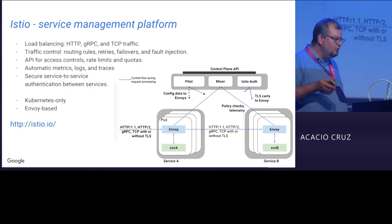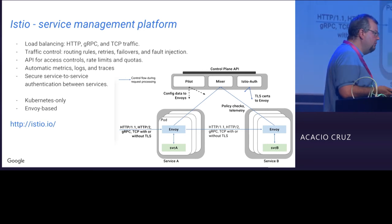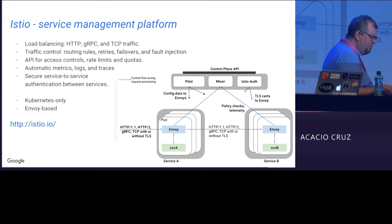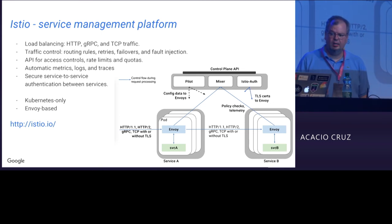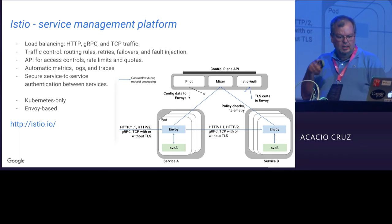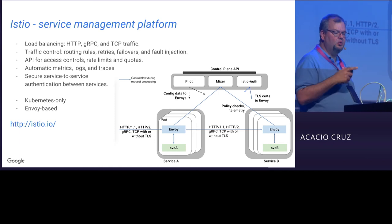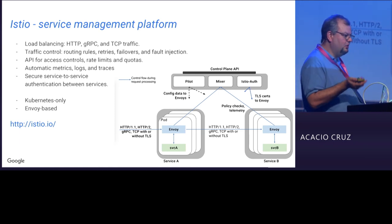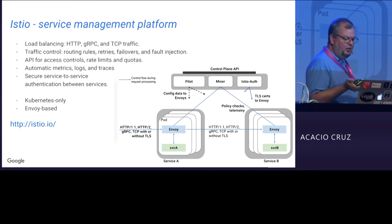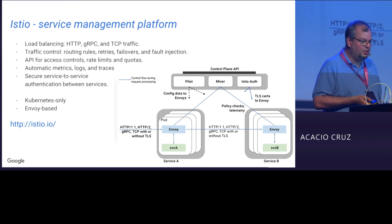An alternative is Linkerd, very similar in architecture but with different implementation. You can do sidecar deployment or a single Linkerd per host, or wrap every single service in its own Linkerd. Going a layer further up, Istio is a platform backed by Google, IBM, and other partners, built on top of Envoy. Envoy provides the service wrapper, and Istio brings a control plane API so you can manage those systems. It's Kubernetes-based and can be easily deployed in your environment or in the cloud.